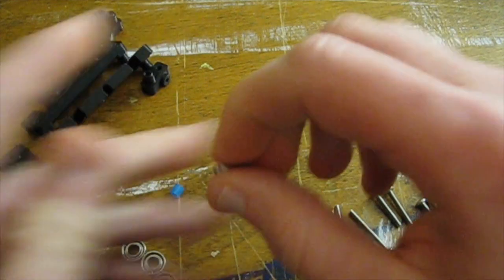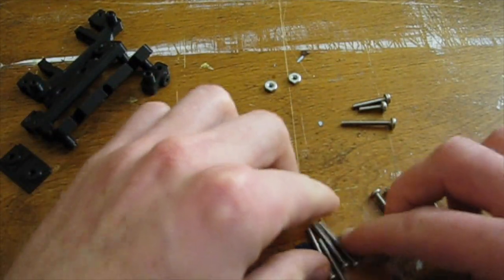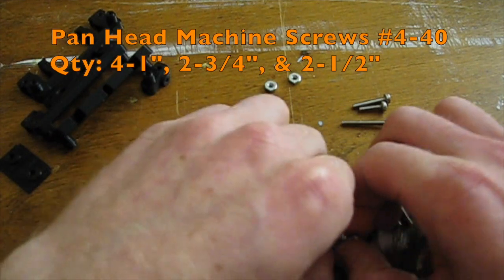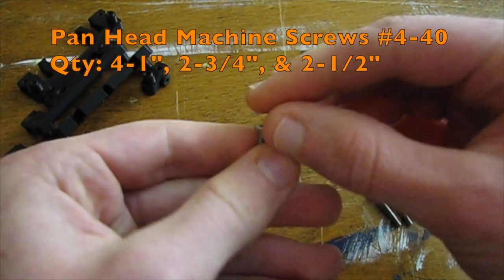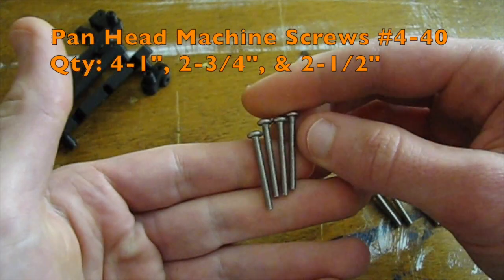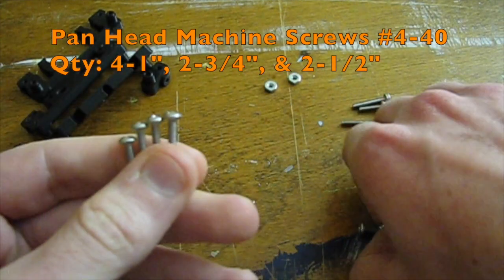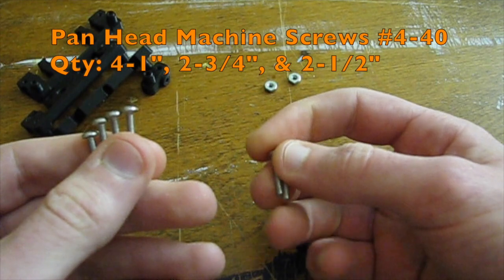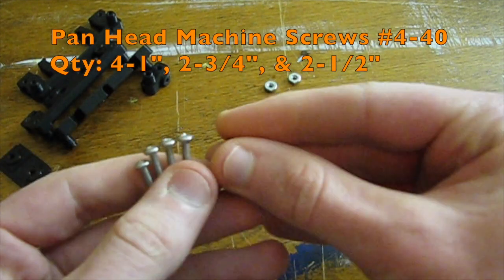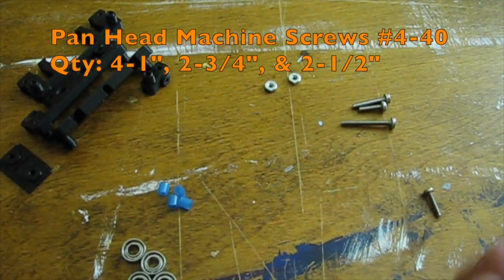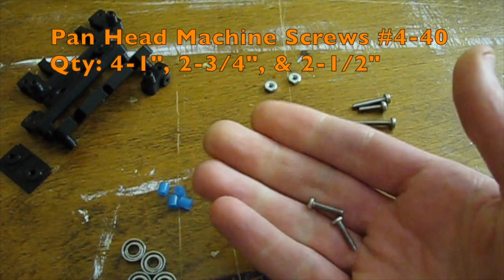So the next thing you're going to need are these screws here. You're going to need 4 one-inch screws. And if you're in the US, these screws, the thread is number 4-40. So 4 of those, an inch long, and then 2 three-quarter inch long ones. And then 2 half-inch ones.